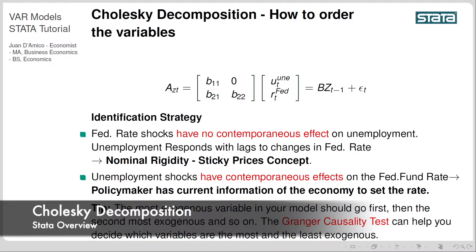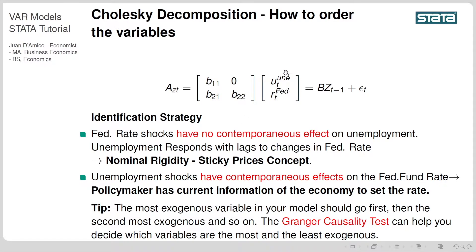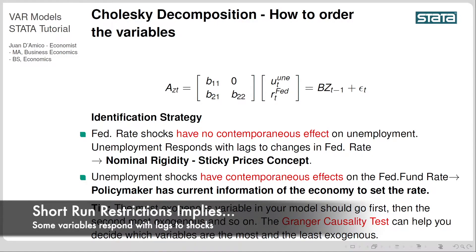Let's talk about the Cholesky decomposition and how to order the variables. Remember that in our model we had two variables: unemployment and the fed rate, both in first differences. Here we have the main matrix with its elements, and there is an element that is zero. The fed rate shocks have no contemporaneous effect on unemployment — unemployment responds with lags to changes in the fed rate. The explanation is nominal rigidity and sticky prices: when the fed increases the rate, it takes some time for other macroeconomic variables like unemployment or inflation to respond.